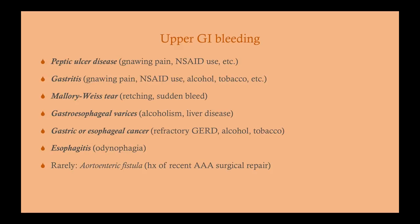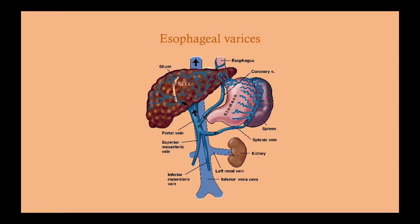Gastroesophageal varices occur in patients with liver disease, often due to alcoholism. Gastric or esophageal cancer: look for a history of refractory GERD, alcohol, or tobacco use — all of which raise your risk of esophageal cancer. Esophagitis can cause upper GI bleed — look for a history of odynophagia (pain on swallowing). Rarely, an aortoenteric fistula can cause upper GI bleed — this is associated with a history of aortic aneurysm surgical repair. Fistula formation into the esophagus can cause significant bleeding, but this is always linked to a history of aortic aneurysm repair.